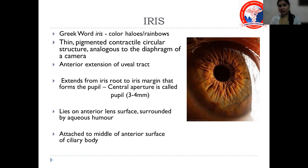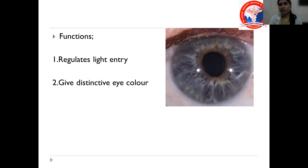The iris extends from the iris root to the iris margin, which is called the pupil — the central aperture, 3 to 4 mm in size. It lies on the anterior lens surface, surrounded by aqueous humor, and is attached to the middle of the anterior surface of the ciliary body. The primary function of the iris is to regulate light entry into the eye, and it also gives a distinctive color to the eye.